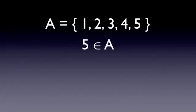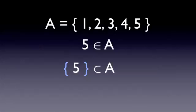If we want to say that something is a subset of another set, we use this notation. Notice that in addition to replacing the element symbol with a subset symbol, we also added braces around the element. This indicates that we are discussing a subset rather than an element. It would be incorrect to write it this way, because the left-hand side is just an element rather than a subset.